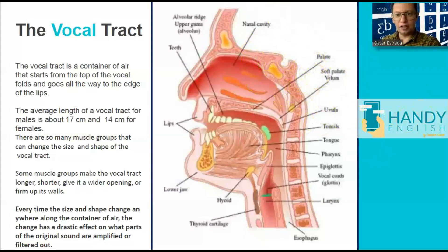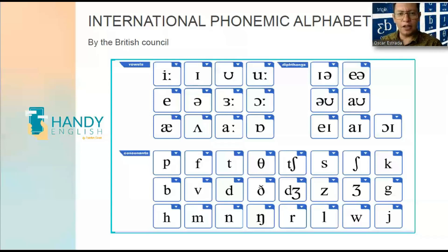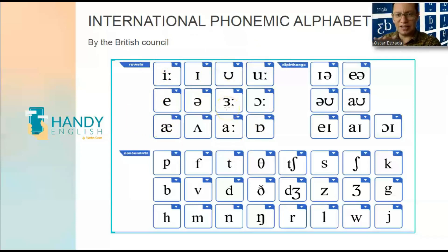We have the International Phonemic Alphabet. For the English language, there are actually thousands of sounds that humans can produce, but we choose the ones that fit into specific languages. For example, in the Spanish language we have only five vowel sounds — A, E, I, O, U. But in the English language, specifically British English, we have 12 vowel sounds — not letters, but sounds. That's why it's sometimes difficult for Spanish speakers to sound like a native, and that's what produces accents, because we're not used in our native language to producing these 12 vowel sounds.